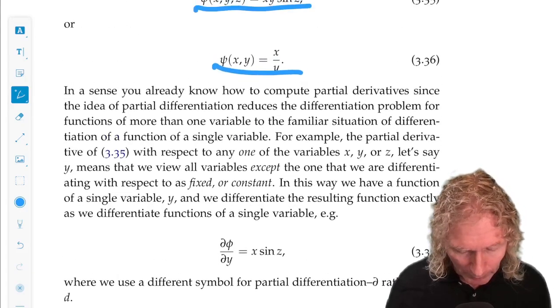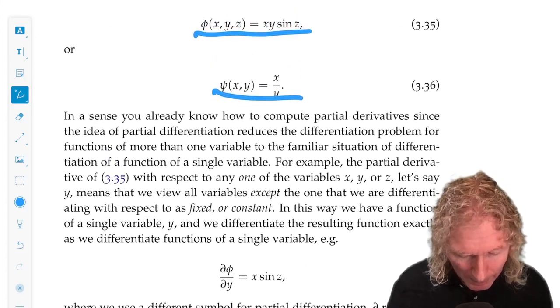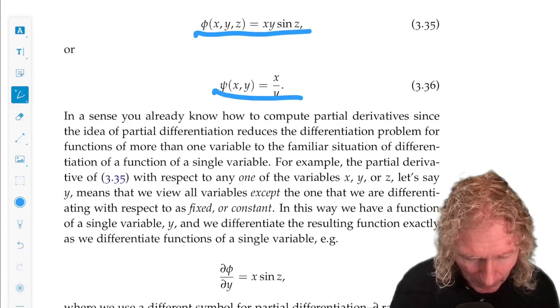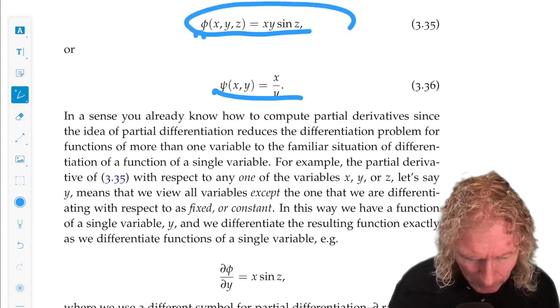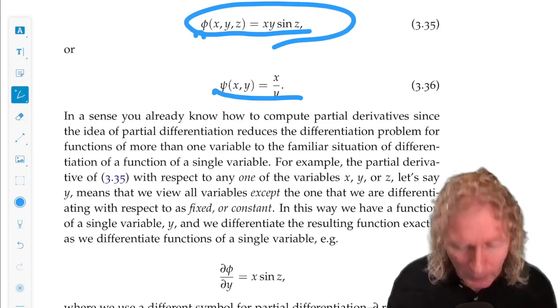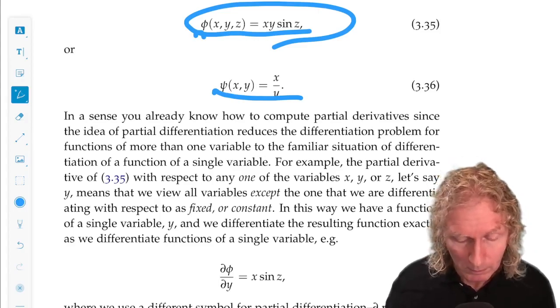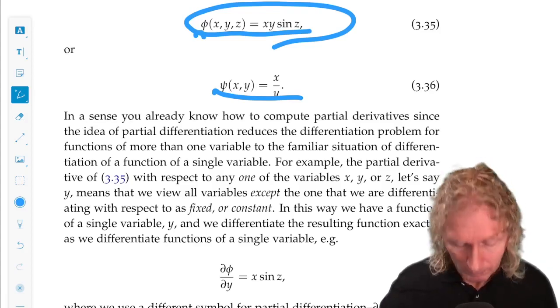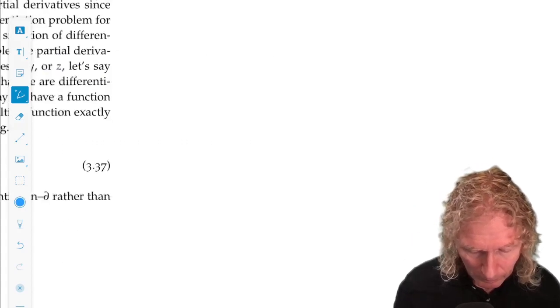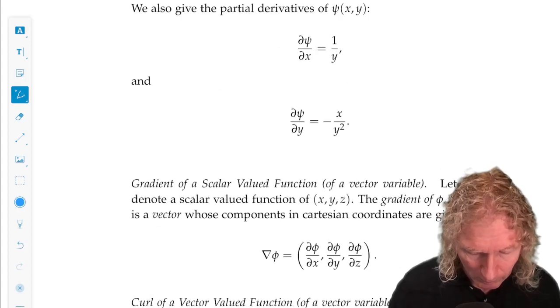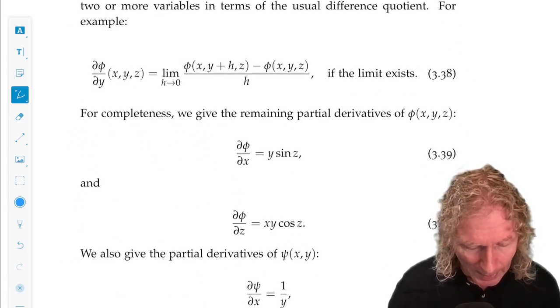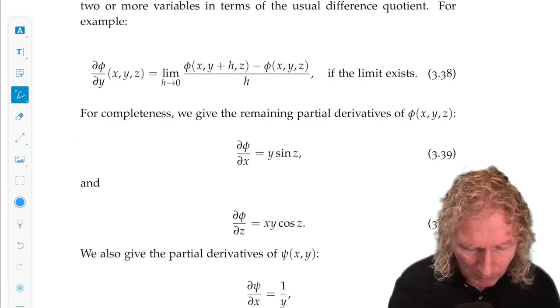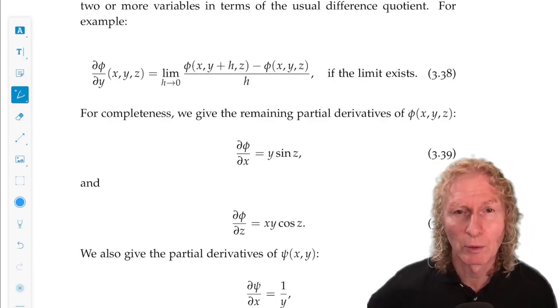So the partial derivative of phi with respect to y, okay, of the first one, well, if I view x and z as fixed, that's just x sine z.